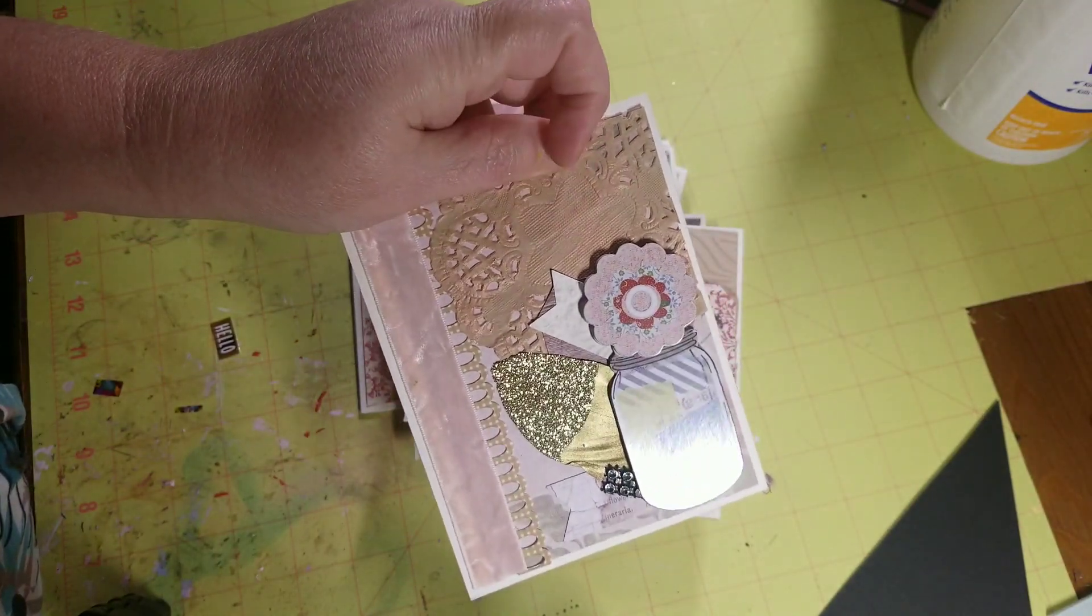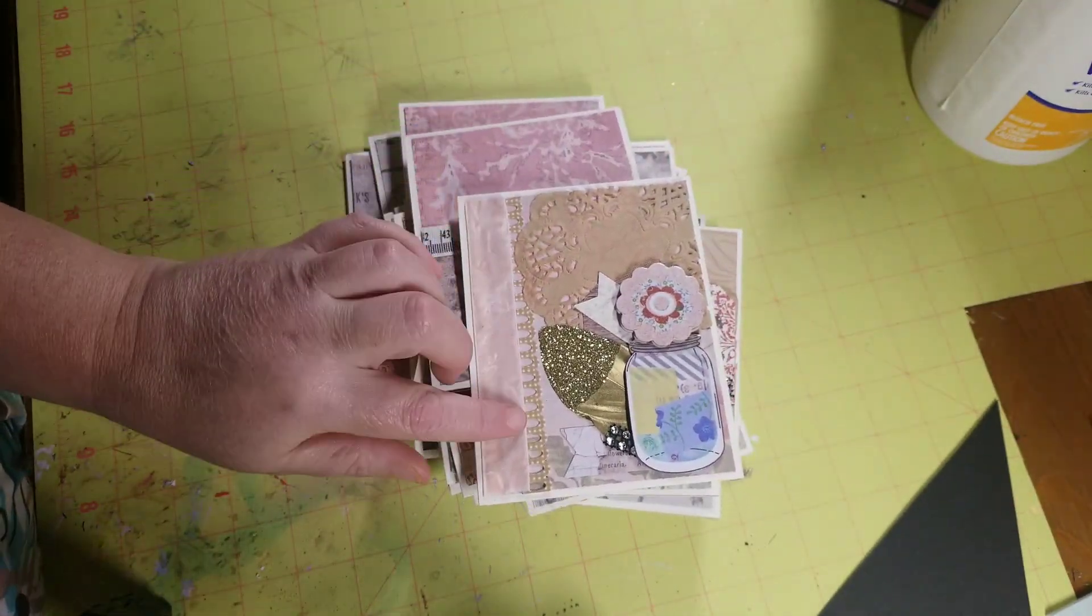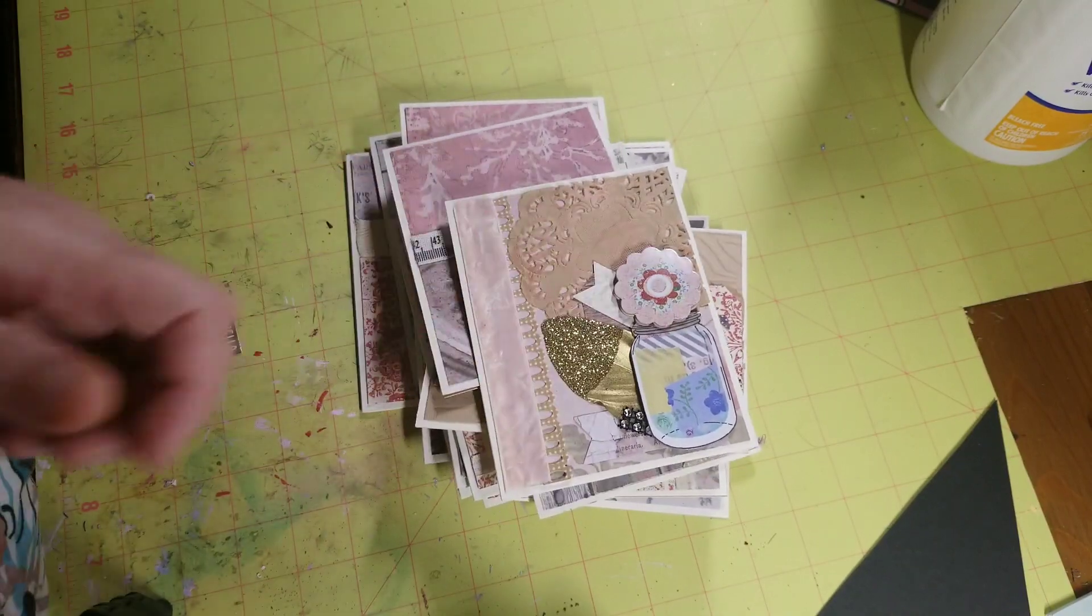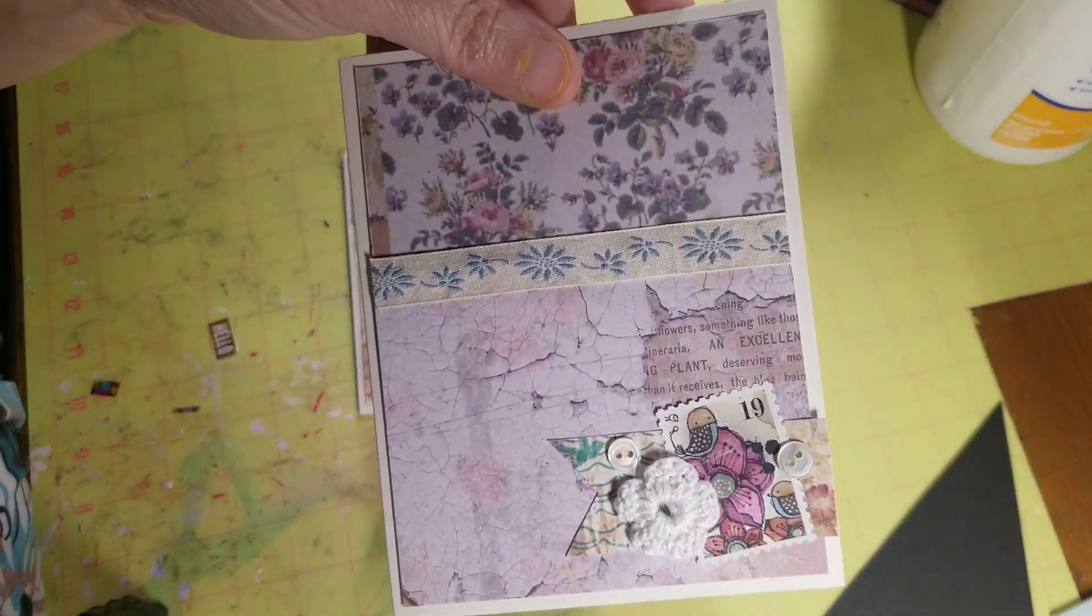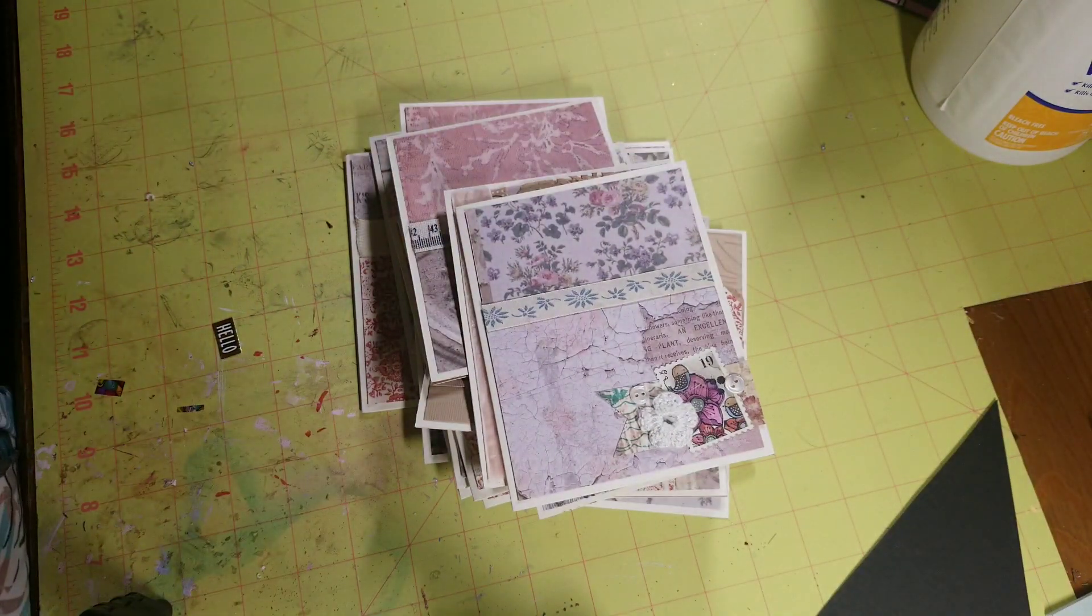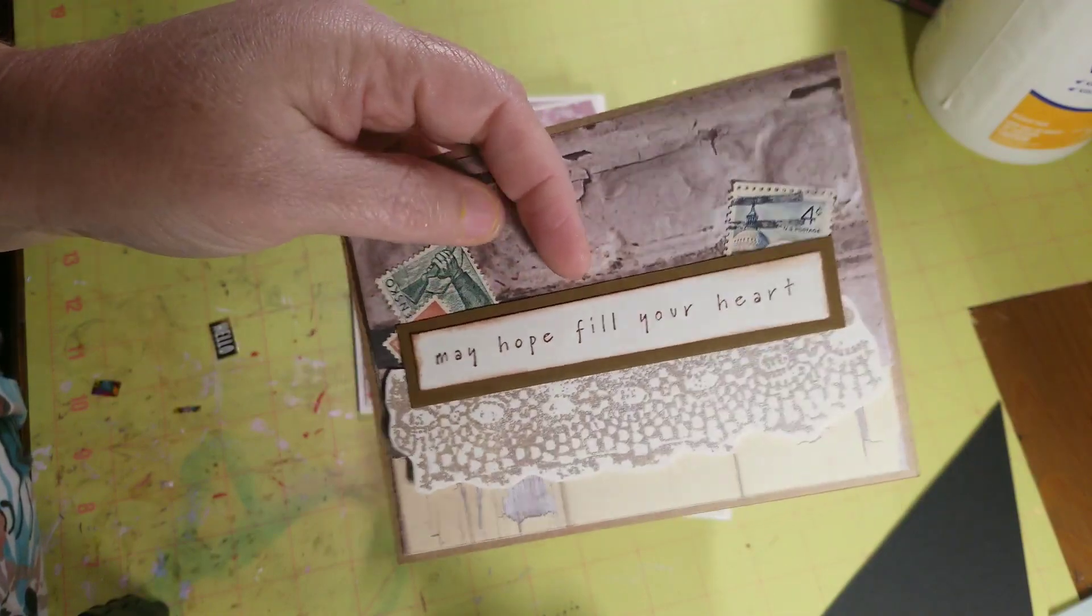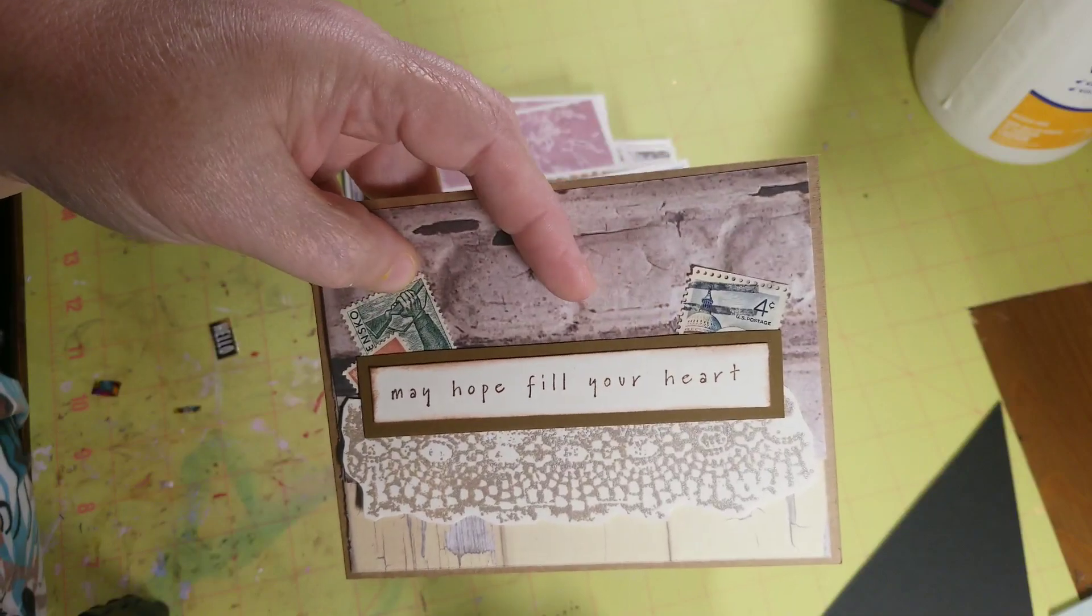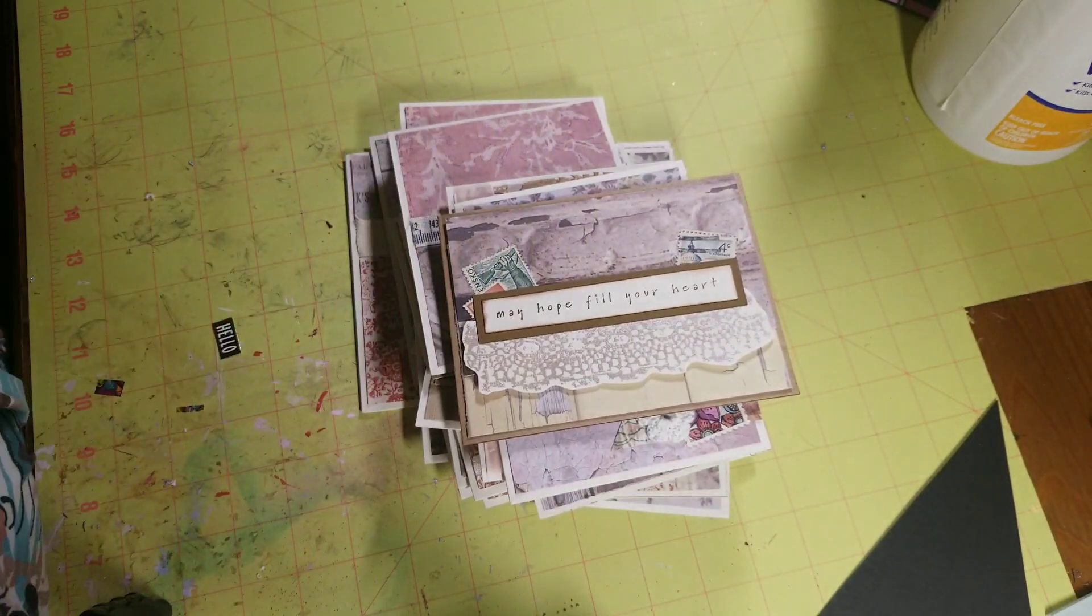That's just a doily I had in my stash, some ribbon because the paper didn't go all the way, and then that's a sticker from a Dollar Tree. And then these stamps - I don't know where I got these stamps, I think somebody gave them to me a long time ago but I've just got a bunch of old stamps and I put them on stuff sometimes.